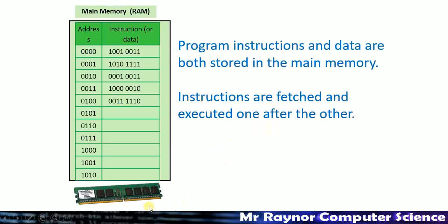Just to visualize that, here's a stick of RAM that you would see inside a computer these days. We can think of that in terms of addresses and then the actual data stored within those addresses. In address 0 we've got a binary number — that could be an instruction, like 'add 3', or it could just be an 8-bit or 1-byte binary number. And the same obviously for each address.